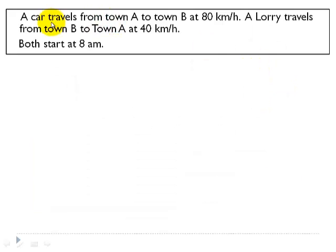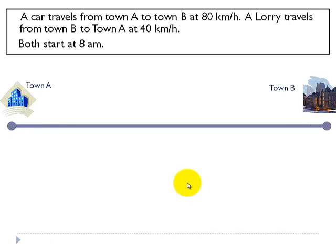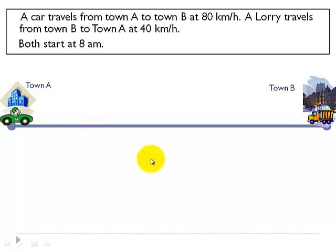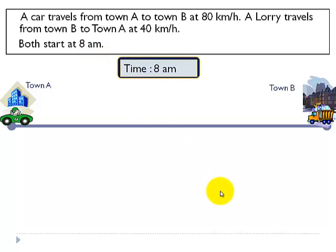A car travels from town A to town B at 80 kilometers per hour. So we have two towns, town A and town B, a certain distance apart. We have a car traveling at 80 kilometers per hour from town A to town B, and a lorry that travels from town B to town A at 40 kilometers per hour. Both of them start at 8 a.m.